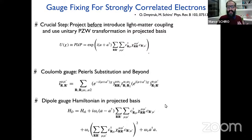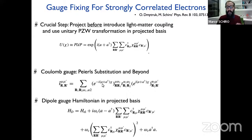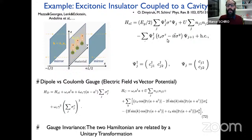We export this to the solid-state context and implement the Power-Zienau-Woolley (PZW) transformation consistently using projected orbitals. The key message: in the Coulomb gauge, you obtain a renormalization of the hopping that looks like a Peierls substitution — more general than standard Peierls, where the photon field appears in an exponential, giving a highly non-linear coupling between matter and light. In the dipole gauge, the coupling is always linear but you have the self-polarization term.